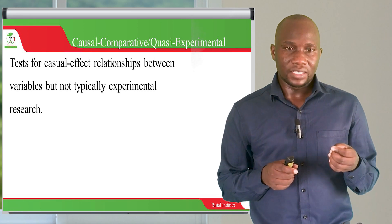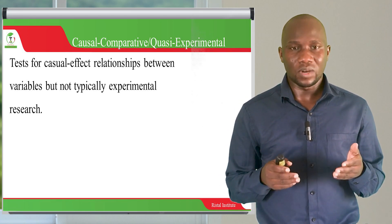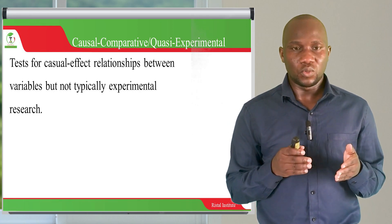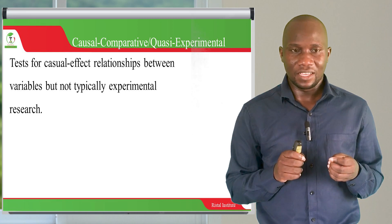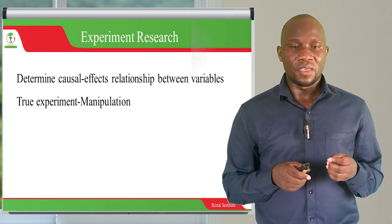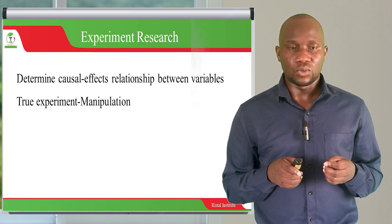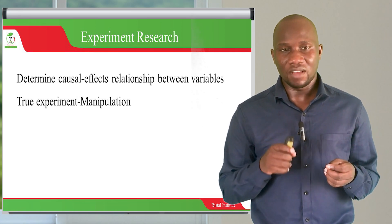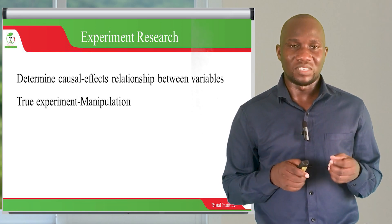The other type of quantitative research is causal-cooperative research or quasi-experimental research. This one also seeks to determine the relationship between variables, which one causes the other. But it is not typically experimental. A typical experimental study is one where the researcher has an intervention on the subjects or research participants. In causal-cooperative study, you want to understand which one causes the other, but the researcher is not manipulating any of the subjects or variables to determine the relationship.